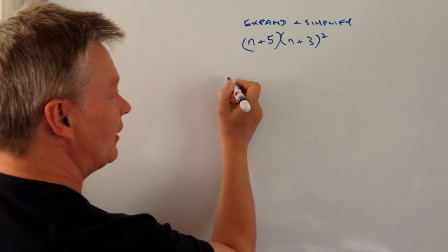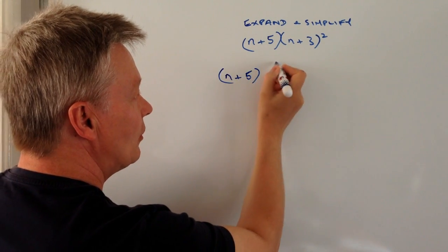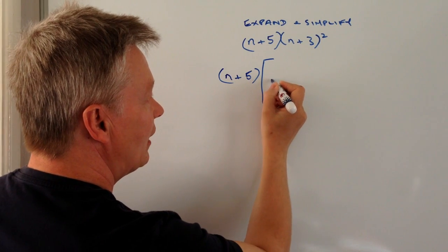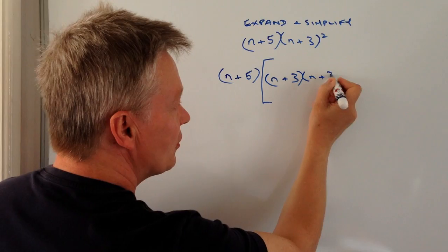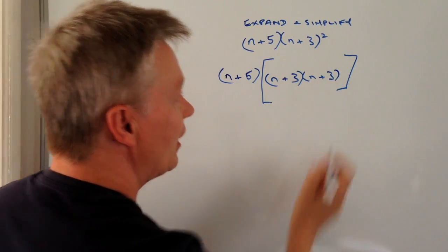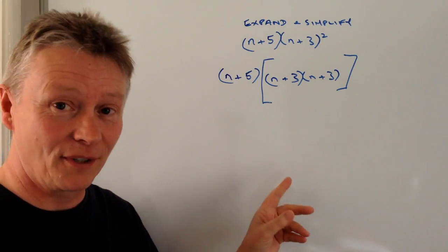So what I'm going to do is I'm going to write this as n plus 5 and then I'm going to multiply that by n plus 3 times n plus 3 because as I'm sure you appreciate n plus 3 squared means n plus 3 times n plus 3.